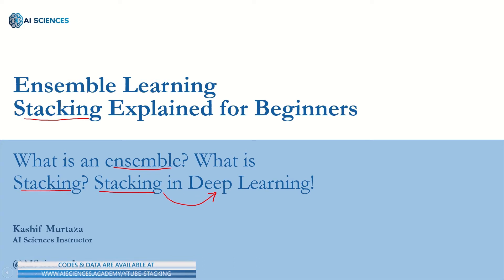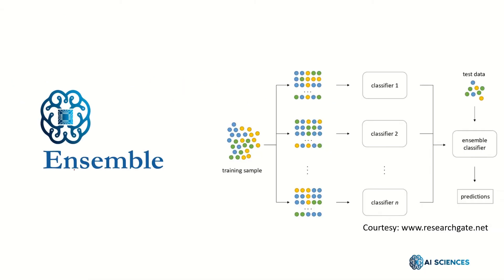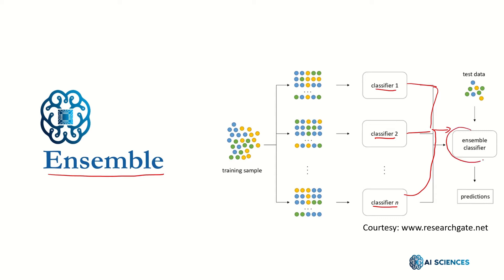Let's dive in and see first what is Ensemble. Ensemble Learning in machine learning refers to combining several models trained on the same training data and combining the predictions of different kinds of models. For example, we can have different models — classifier 1 is KNN, classifier 2 is SVM, classifier 3 might be a neural network — and we combine their predictions on training data.